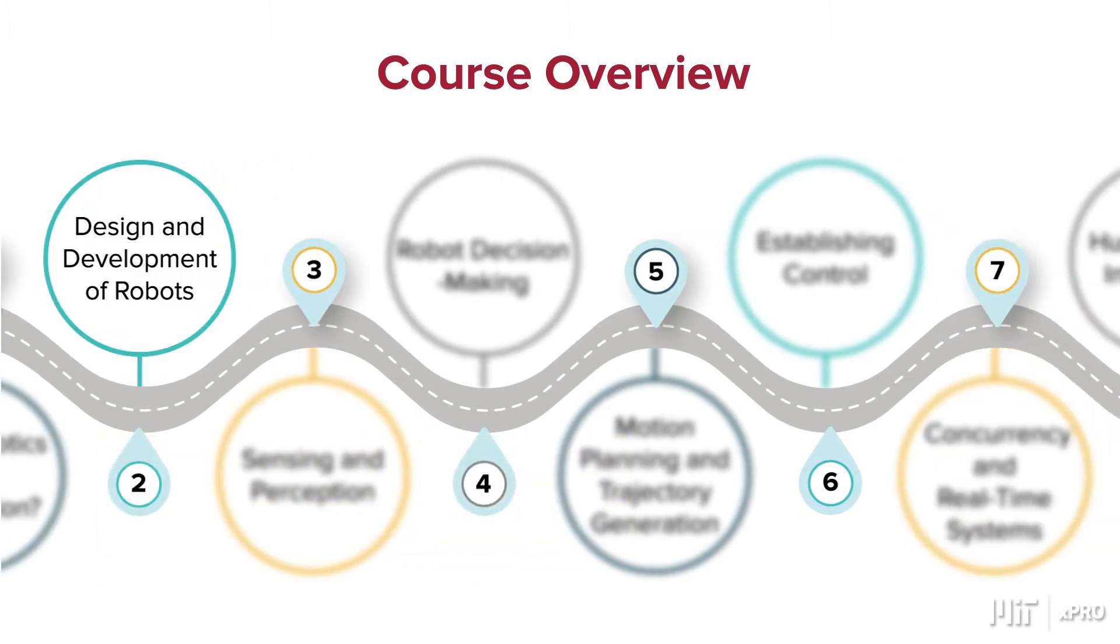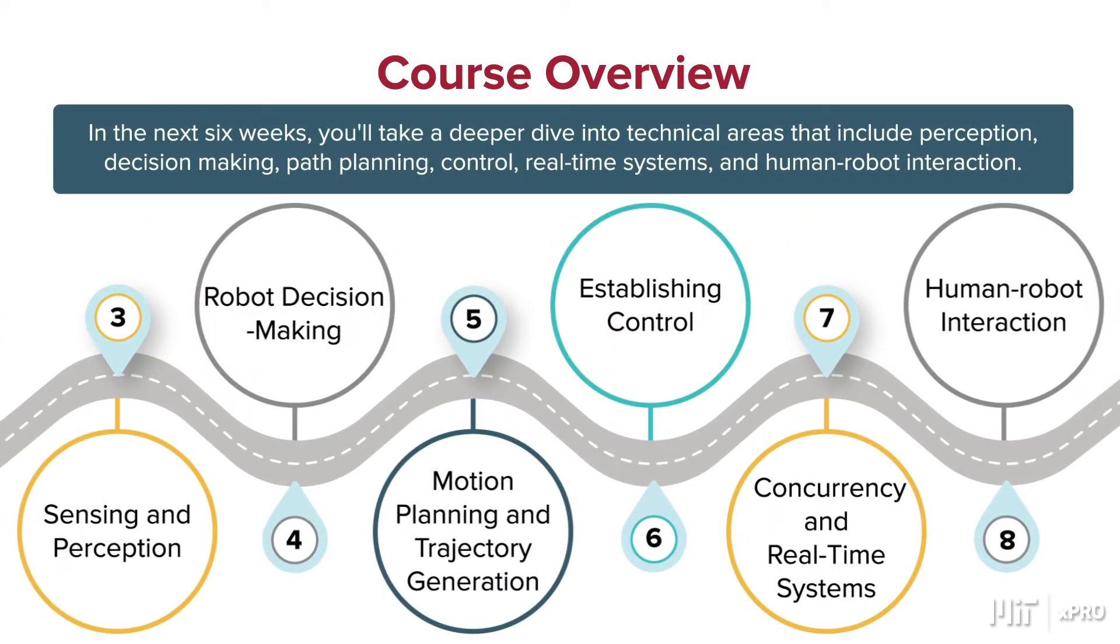The second module transitions the course to its technological focus, exploring robotics as a field that exists where a variety of related technological areas intersect. In the next six modules, you'll take a deeper dive into several of these technical areas, which include perception, decision making, path planning, control, real-time systems, and human-robot interaction.